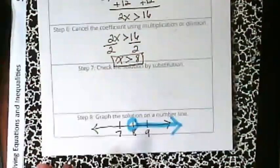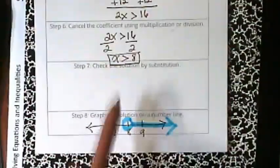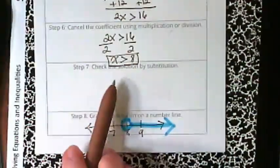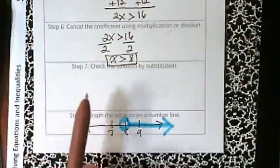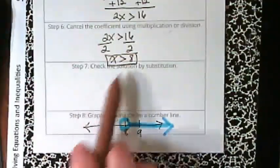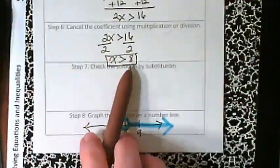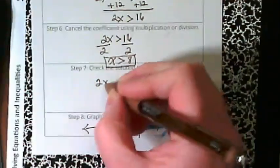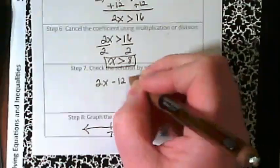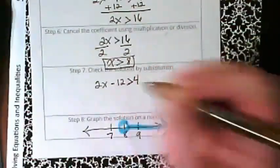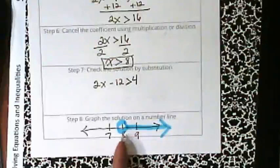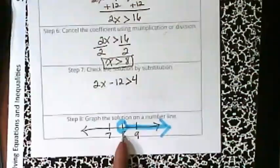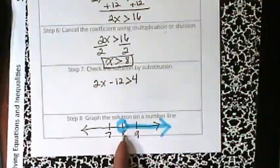And I think it's important to have that graph in mind as we're doing our step 7, check the solution by substitution. If this was an equation, we would just take that 8 and put it into what we had to start with. So what we have is 2x minus 12 is greater than 4. And what we found is that any number bigger than 8 should work. So I'm going to try 10.